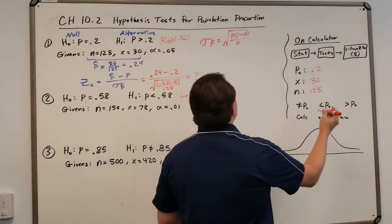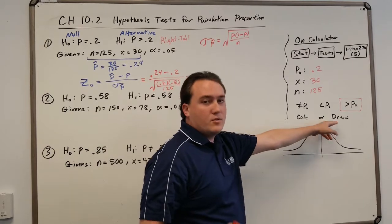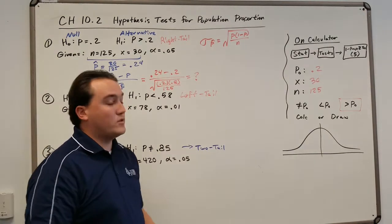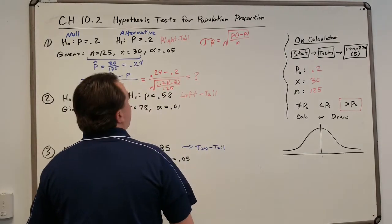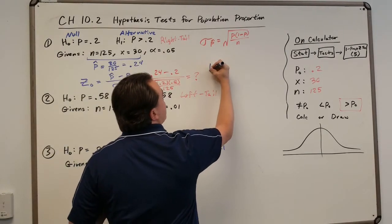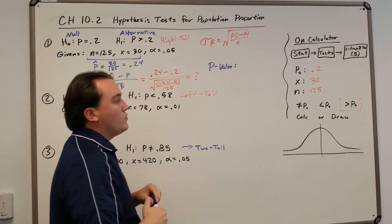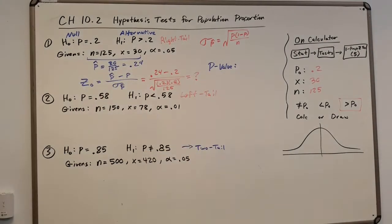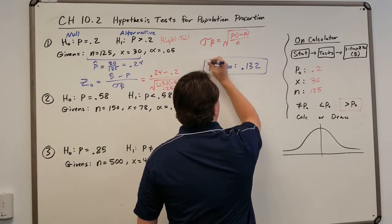Okay, so we type in these. This is a greater than problem, so we're going to choose this one. I like to put draw because you can actually see what's happening. So once you do this, it's going to give you the important part. It's going to give you something called the critical p-value. So for us, for number 1, we get a p-value of, so what this calculator is doing for you is it's giving you a p-value of 0.132.